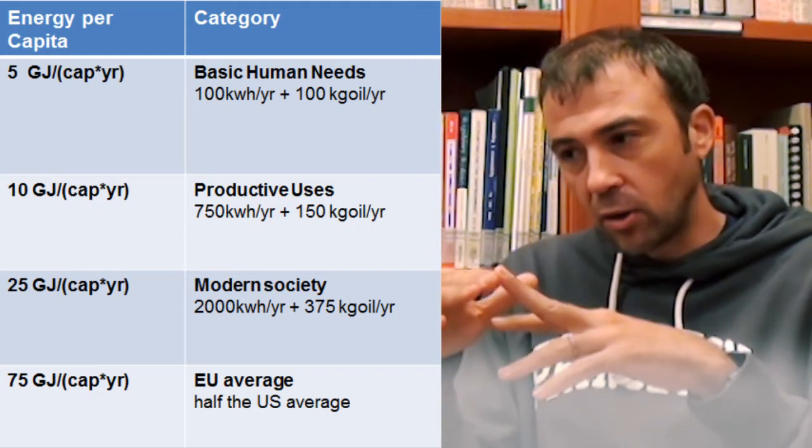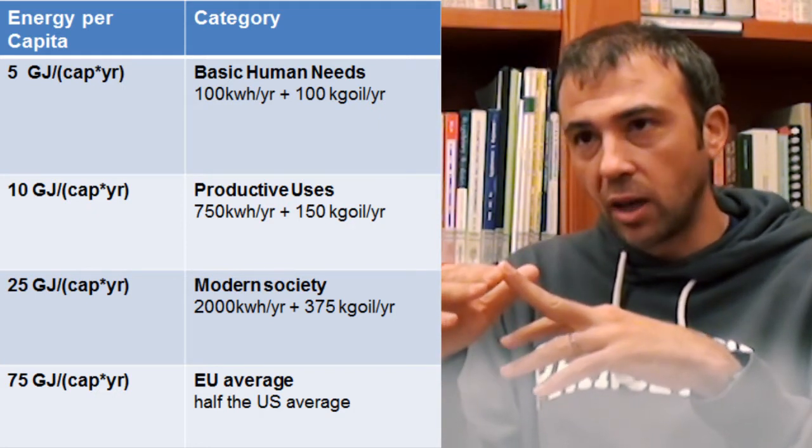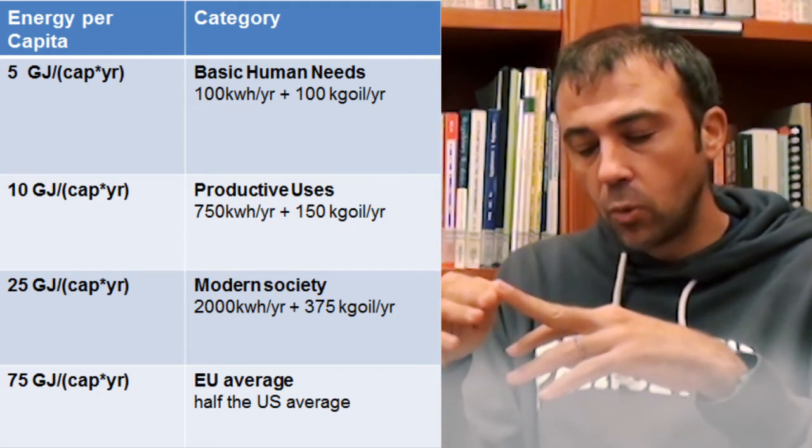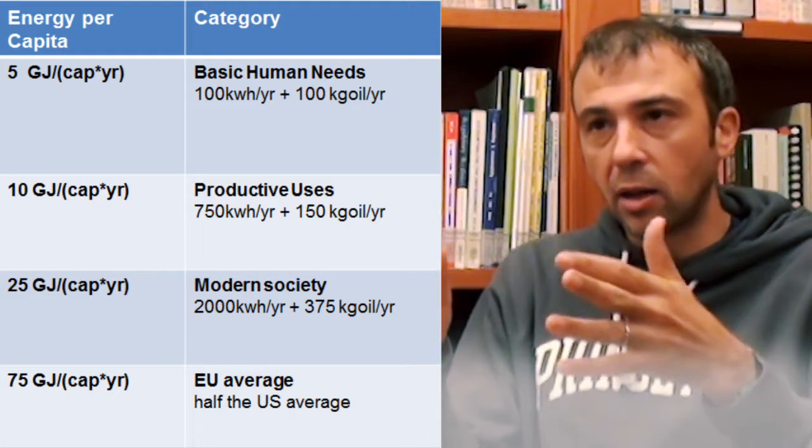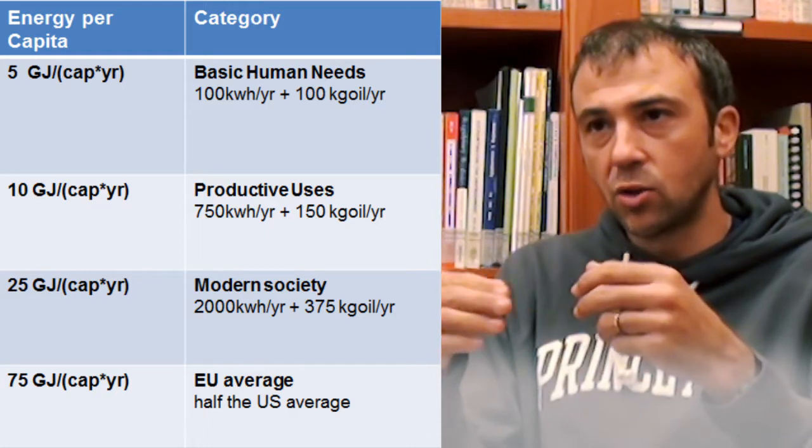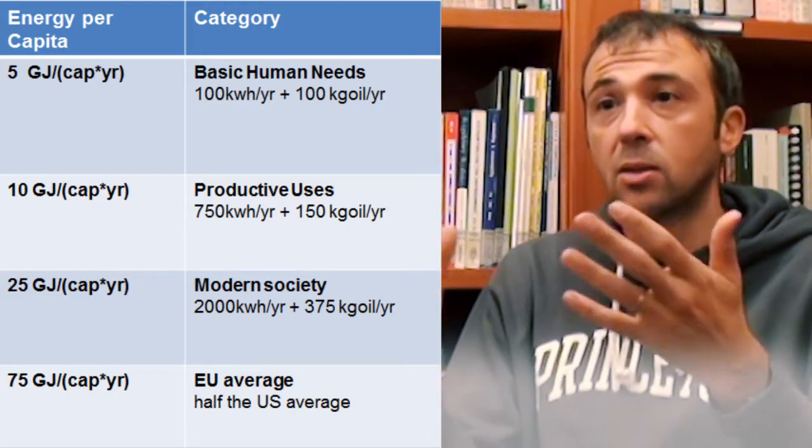When we look at the third category, which is 25 Gigajoules, this is again, according to the United Nations, defined as the modern society level.